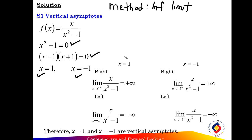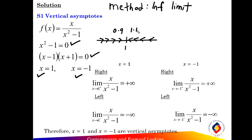For the first value x equals positive 1, draw the number line. From the left of the function, the nearest value is x equals 0.9, and from the right, the nearest value is 1.1. Substitute 0.9 and 1.1 into the function to find the sign of the infinite limit. From the right of the function, the limit equals positive infinity, and from the left equals negative infinity.